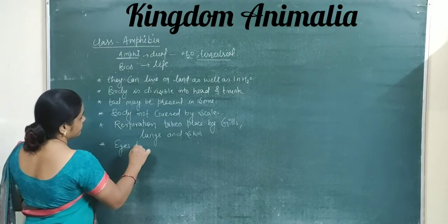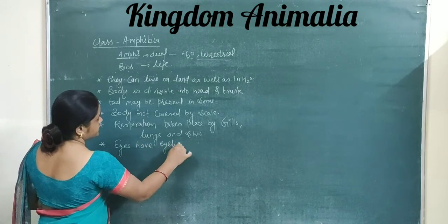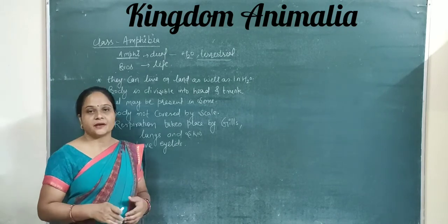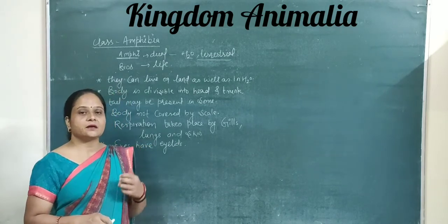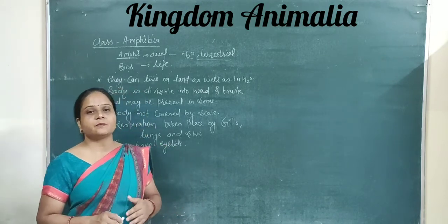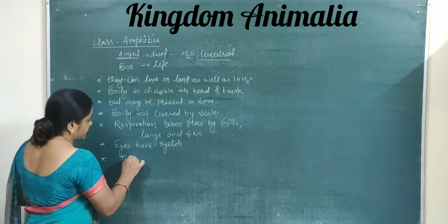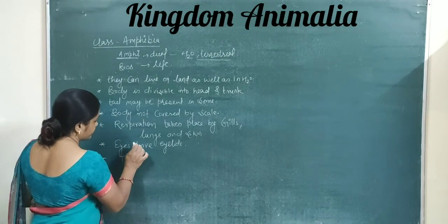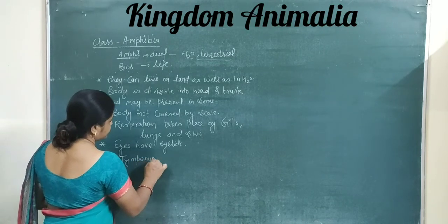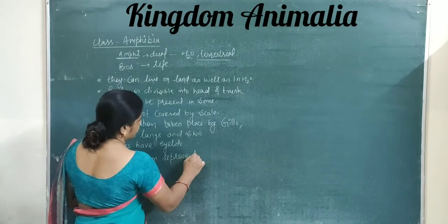Eyes have eyelids — eyelids are present on the eyes. For the ear, there is a tympanum. The tympanum is an ear drum, that is a membrane, and it represents the ear in Amphibia.